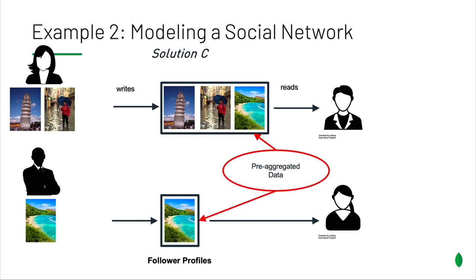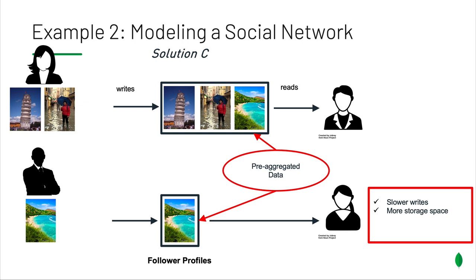The interesting thing about this third solution is the data is pre-aggregated, which means we're going to get slower writes. In the case of Oscar, we need to write the images in two places, which takes more storage and creates duplication. However, we get faster reads when users come in and want to see pictures on their homepage. So if the most important attribute of our system is a good user experience — it has to be really fast — then solution C would be the best. Like the previous example, in order to tell which model is best, we need to understand what the workload for the system is.